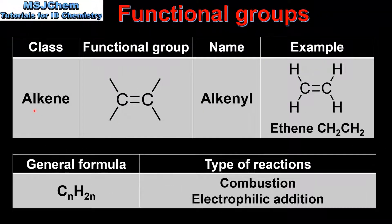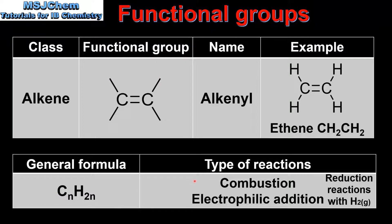The next example we'll look at is the alkenes. Alkenes are unsaturated hydrocarbons. The class name is alkene and the functional group name is alkyl. The functional group is a carbon to carbon double bond. On the right we have an example of an alkene with two carbon atoms which is ethene. The general formula for the alkenes is CnH2n, and the types of reactions that alkenes undergo are combustion reactions and electrophilic addition reactions.